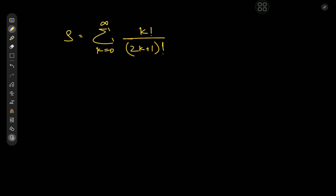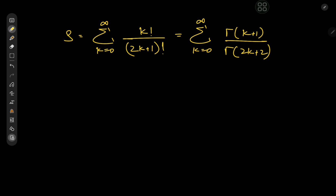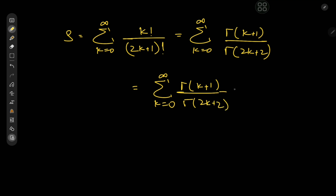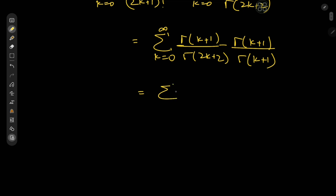We'll do the obvious by stating the factorials as gamma functions, because most of my integrals make use of the gamma function, so why not just use it here as well. We have k factorial equals gamma k plus 1, so 2k plus 1 factorial equals gamma 2k plus 2, which is pretty interesting. Notice that in the denominator we have gamma k plus 1 plus k plus 1, so why not expand the term by a factor of gamma k plus 1? So we have gamma k plus 1 divided by gamma 2k plus 2, times gamma k plus 1 divided by gamma k plus 1.